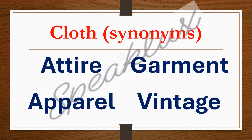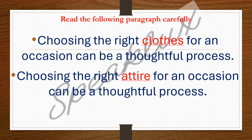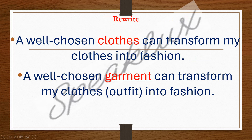So those are the synonyms. Now it's time to rewrite that paragraph by replacing 'clothes' with its various synonyms. Choosing the right attire for an occasion can be a thoughtful process — here I use 'attire' because I'm talking about a person's full look including all things. A well-chosen garment can transform my clothes into fashion — here I use 'garment' because I'm talking about a particular type of clothing.